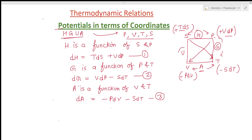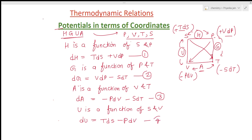Similarly, if you have to find u, it will be a function of s and v, so we can write du equals tds minus pdv — this is the fourth equation. So these four equations — dh, dg, da, and du — give us the potentials h, g, u, and a in terms of the coordinates s, p, t, and v.